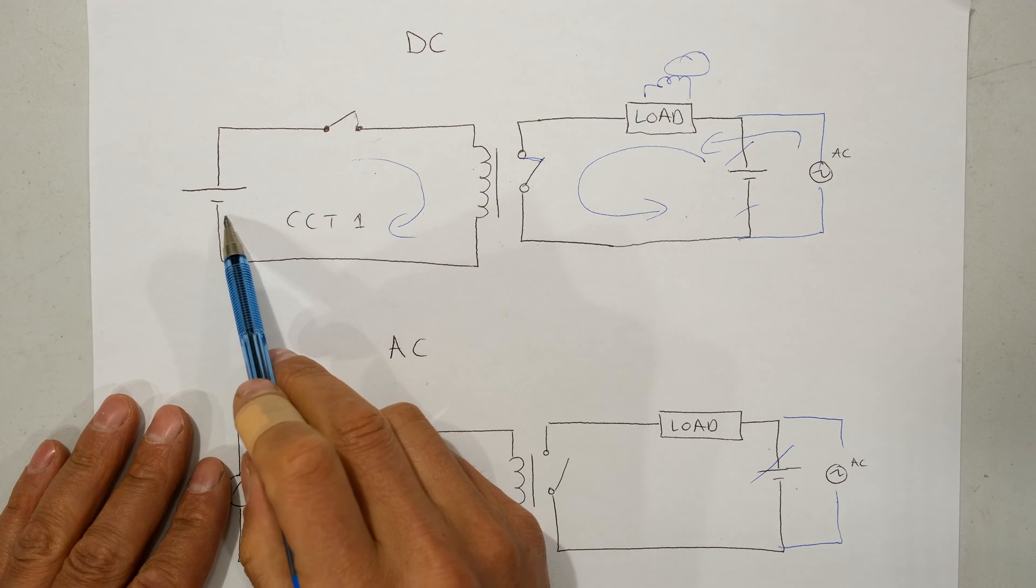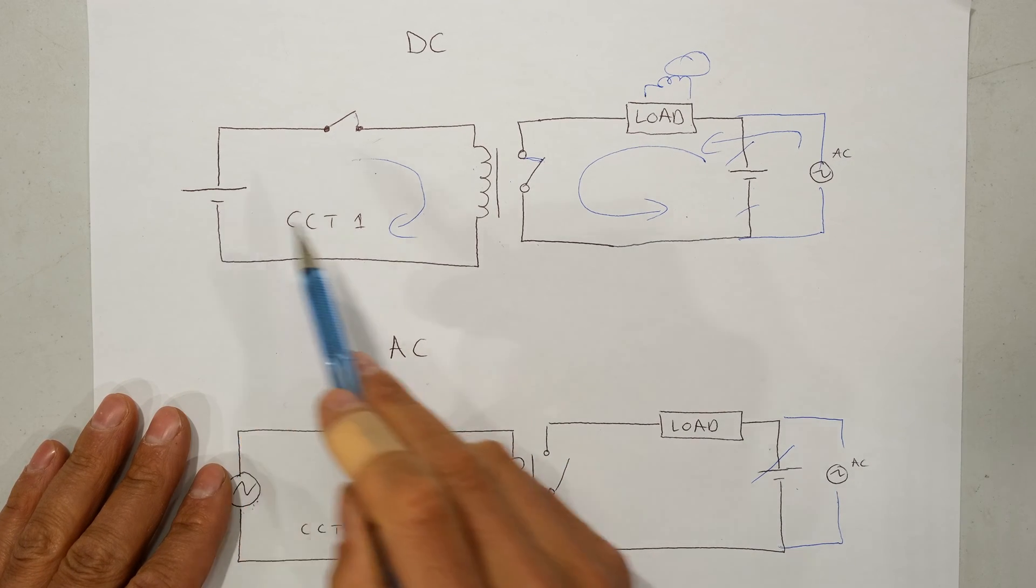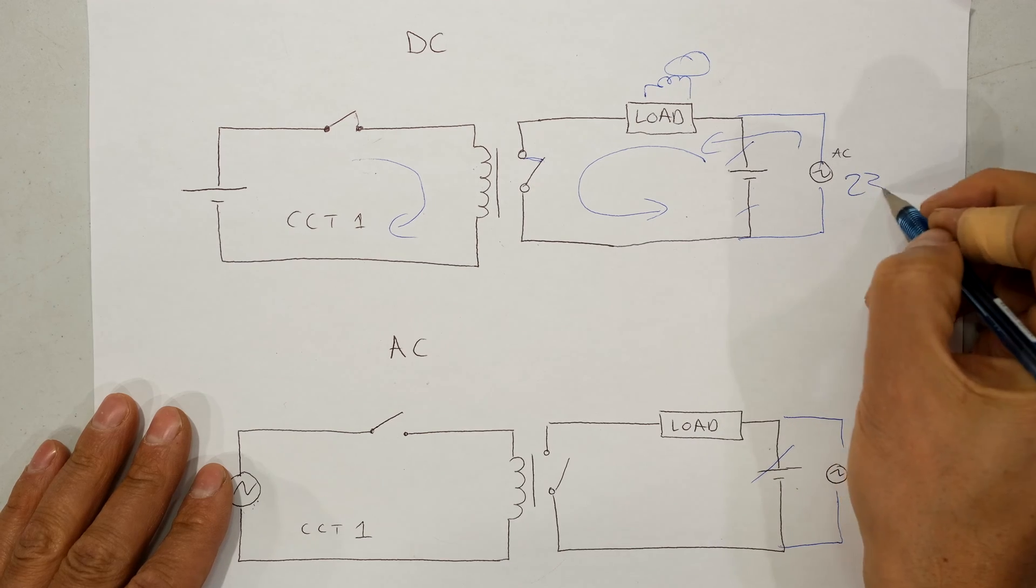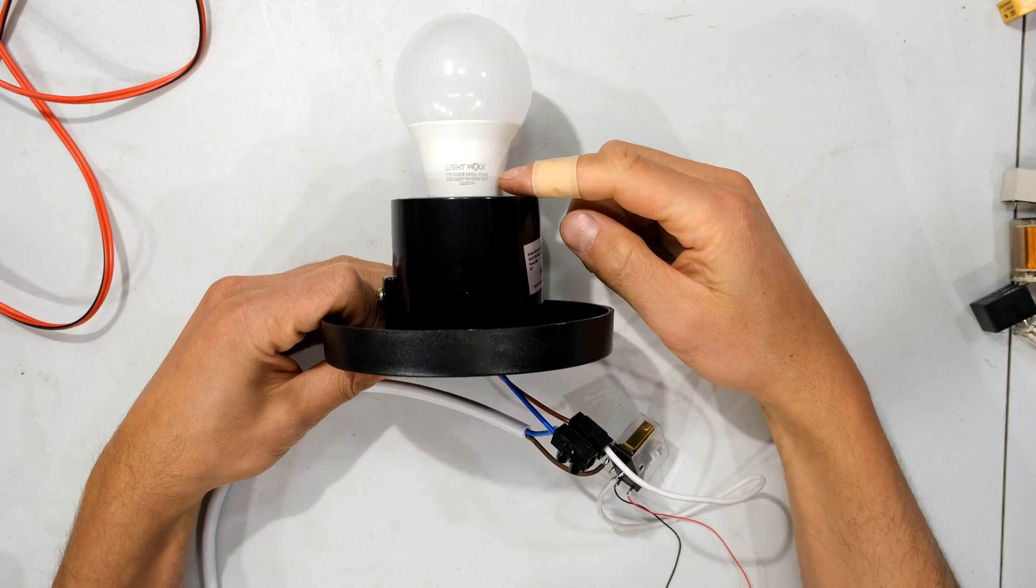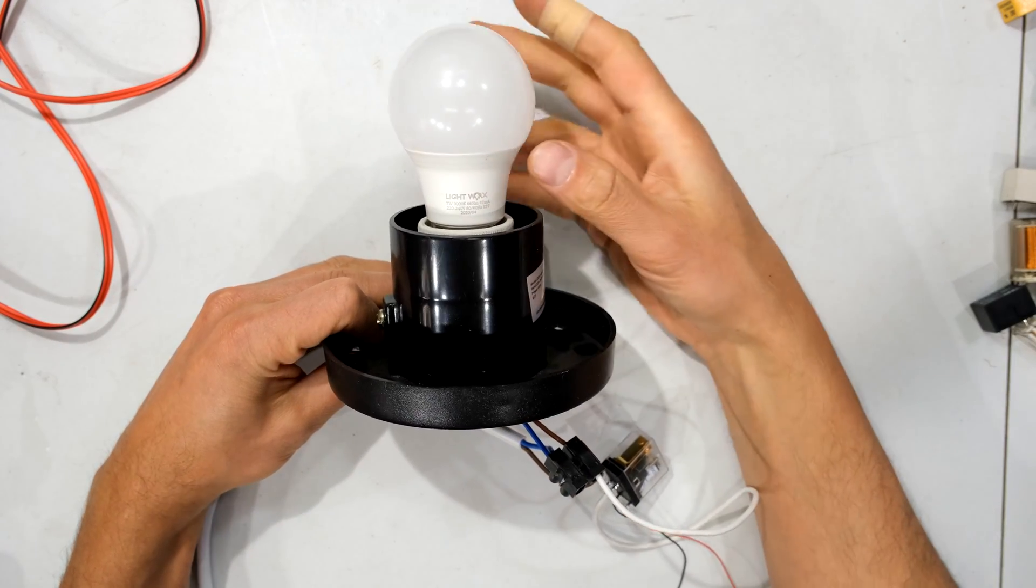I'm now going to demonstrate how I use a DC battery to control a 230 volt AC supply connected to a load. Now over here I have a 230 volt globe.